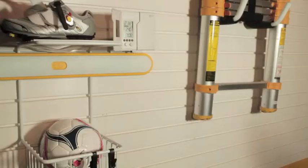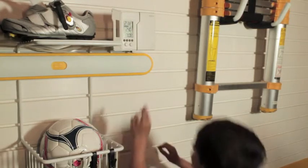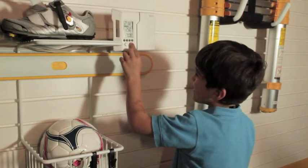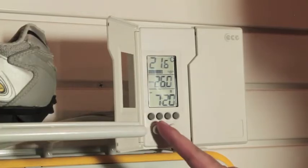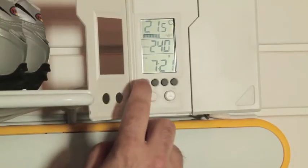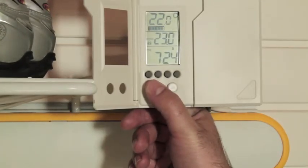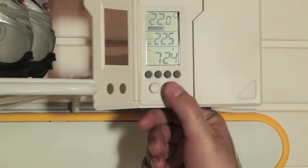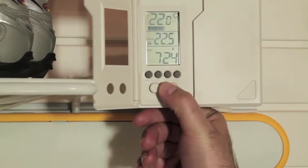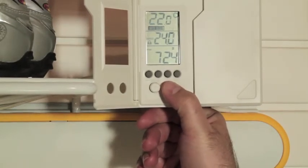Next we will talk about setting the high limit function. This will prevent anyone from raising the temperature higher than the temperature that you select. First, set your temperature to your desired limit. Next, press the usage time and the set buttons for three seconds. A lock symbol will now appear on screen. Now we can use the down arrow button to reduce the temperature, but the up arrow button will only bring the temperature as high as our limit.